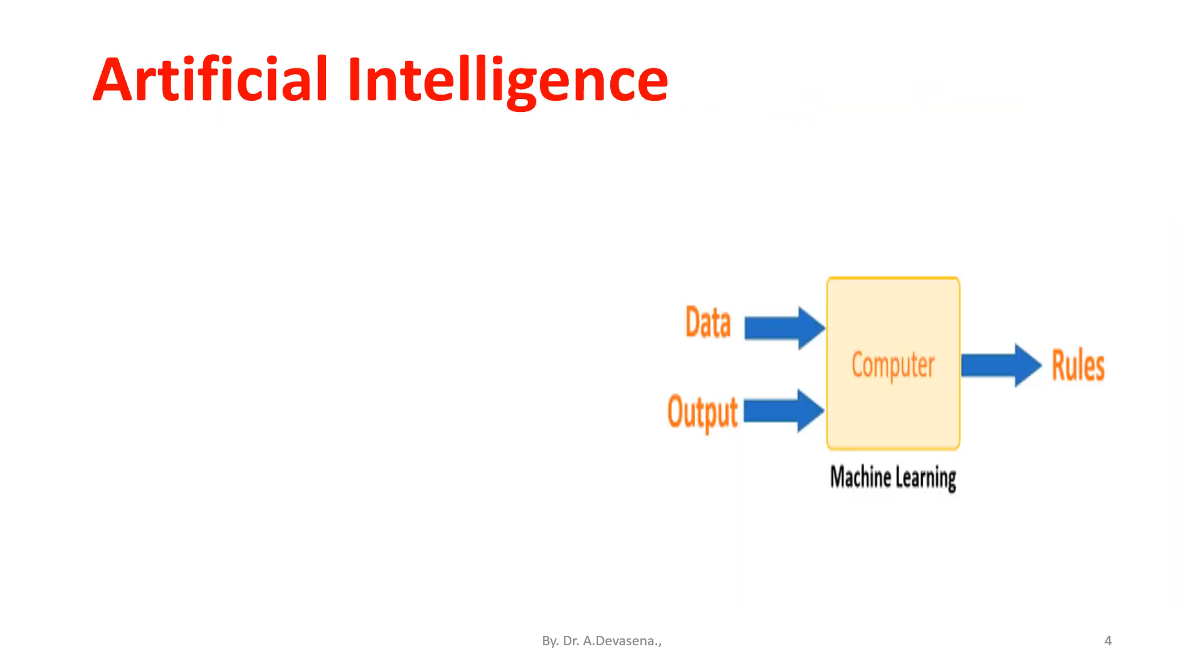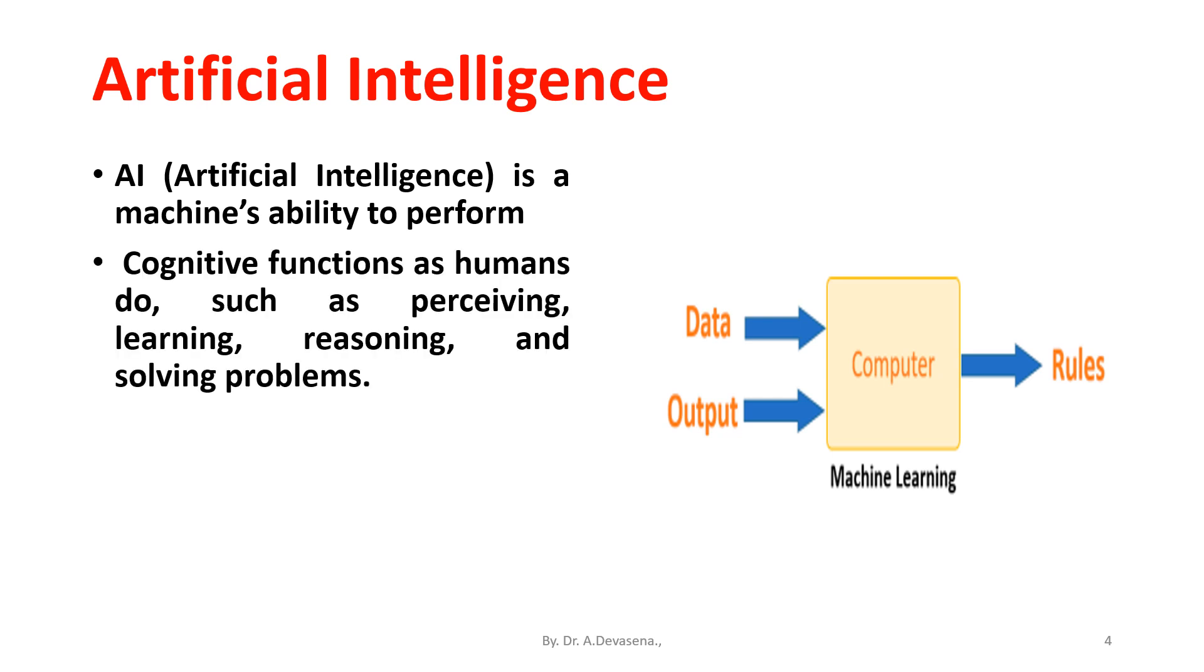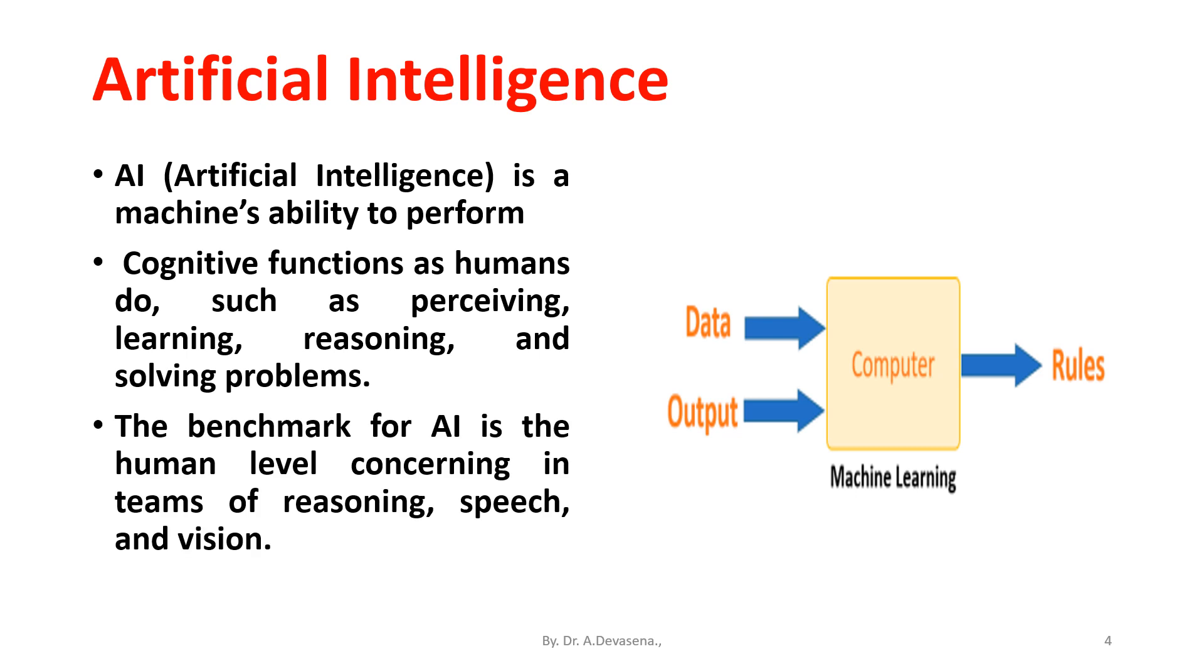Before going to discuss machine learning, let us see what is artificial intelligence, because machine learning is a branch of artificial intelligence. Artificial intelligence is a machine's ability to perform cognitive functions as humans do, such as perceiving, learning, reasoning, and solving problems. The benchmark for artificial intelligence is the human level concerning teams of reasoning, speech, and vision.